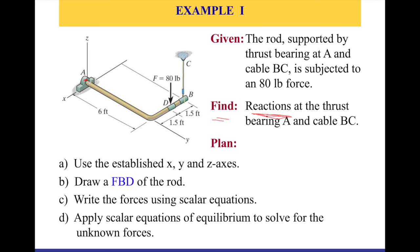First, we're going to use the established XYZ axis as shown in the image. This is my positive x-axis, this is my positive y-axis, and this is my positive z-axis. We'd like to draw a free body diagram of the rod. When I say free body diagram, we'd like to remove all surface contacts and isolate the object from its supports. I'm going to cut the whole thing here and look at the forces.